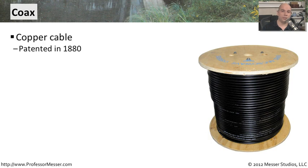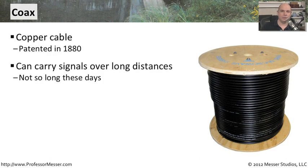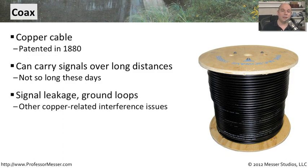Coax connections are effectively copper wires put inside very heavy and thick cables. It's a type of cable that has been patented since the 1880s. You can carry signals over very long distances with coax, though these days we use fiber instead. Coax has traditionally been used to extend signals over a very large geographical area. One disadvantage is signal leakage and even ground loops, because you're connecting two very diverse connections with a single cable and copper between them. There are also other copper-related interference and leakage problems when extending a network over such a long area.